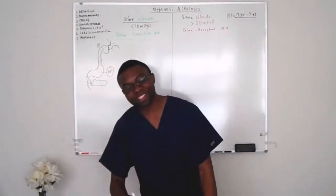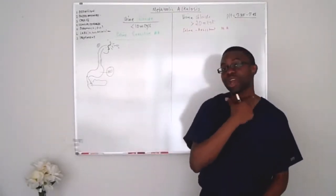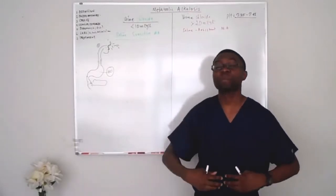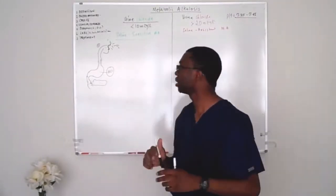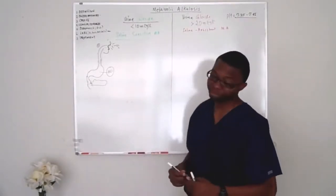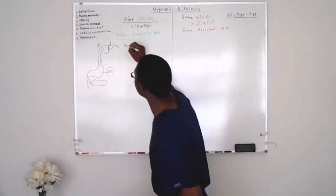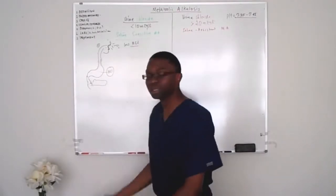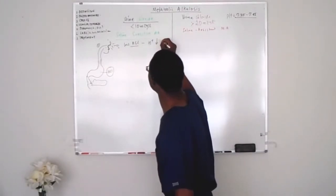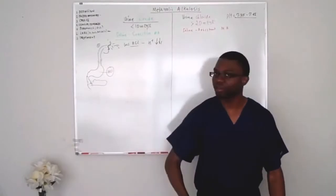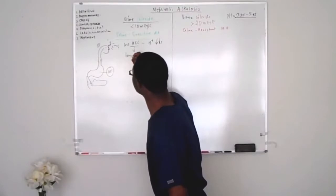The stomach acid is extremely acidic. So the first thing you do when you vomit is you lose hydrogen chloride. Hydrogen ions are lost with excessive vomiting. However, you're also losing fluids — because when you vomit for so long, you're losing extracellular fluid volume.